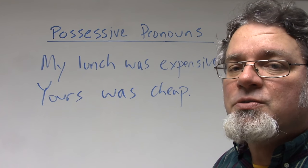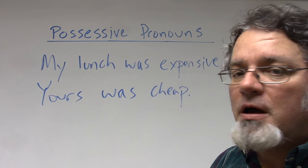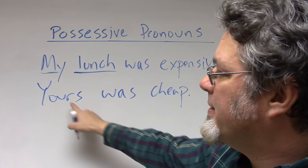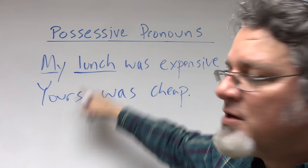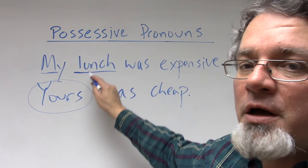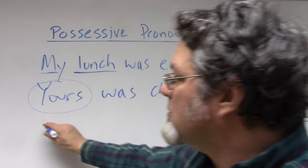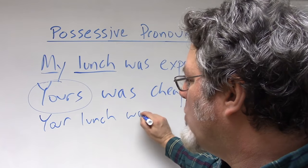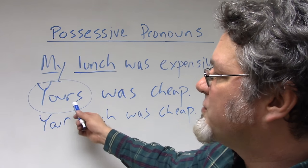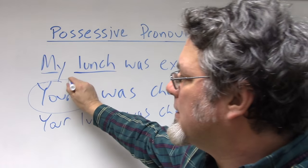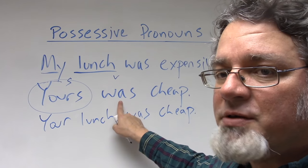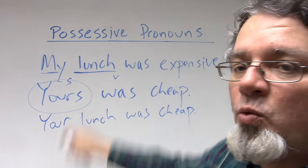Let's look at these two sentences: 'My lunch was expensive. Yours was cheap.' Here's a possessive adjective that describes the word 'lunch,' and here's a possessive pronoun. When I use the word 'yours,' I'm thinking about the word 'lunch.' It would be possible to say 'your lunch was cheap,' but instead I used the possessive pronoun. Notice also that 'yours' is the subject and 'was' is the verb — both singular.